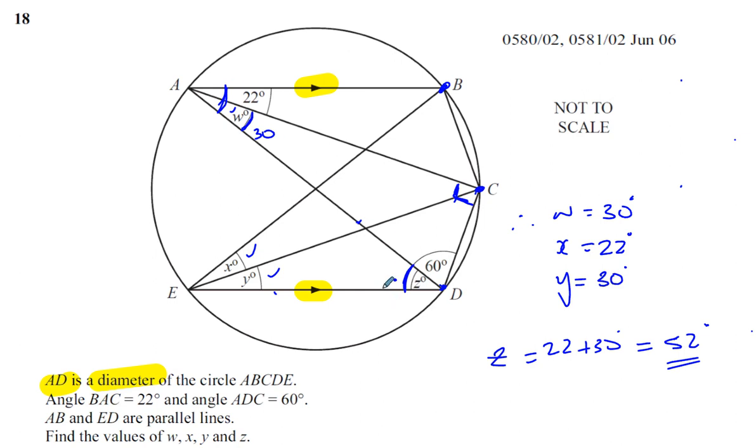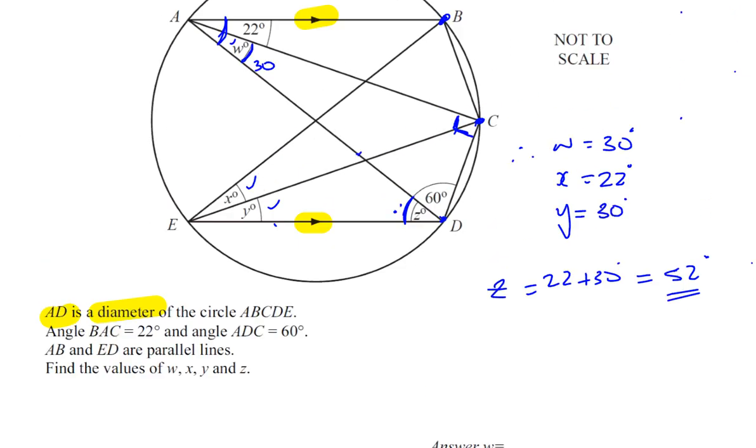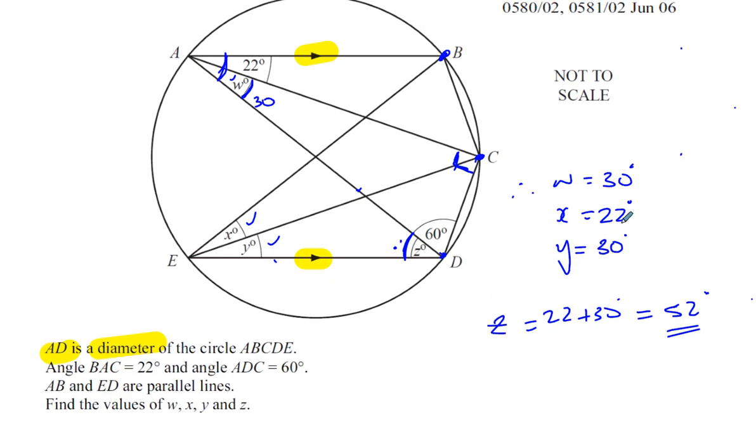Now once we've shown that this is the same as these two, then we can say this is isosceles. We don't actually have to go that deep in this question. So the answers are 30 for W, 22 for X, 30 for Y, and 52 for Z.